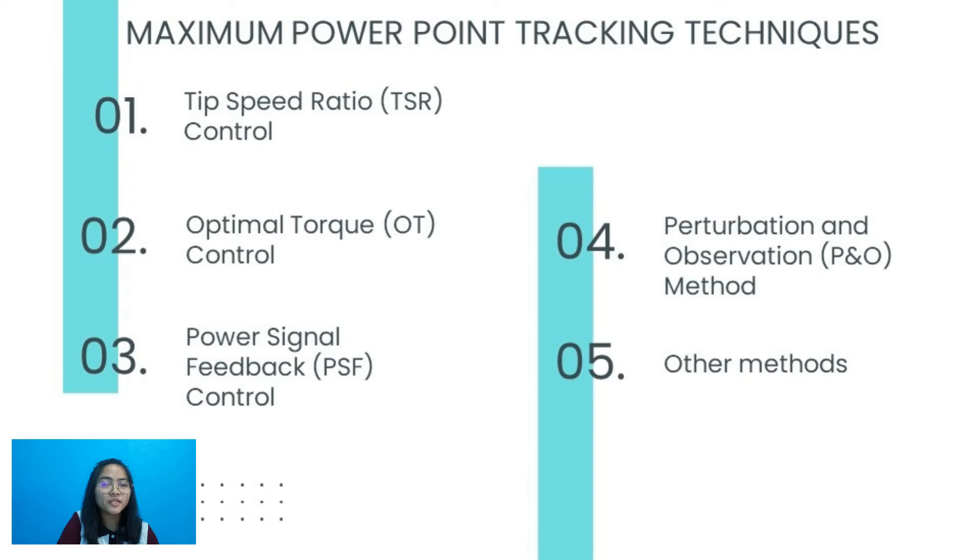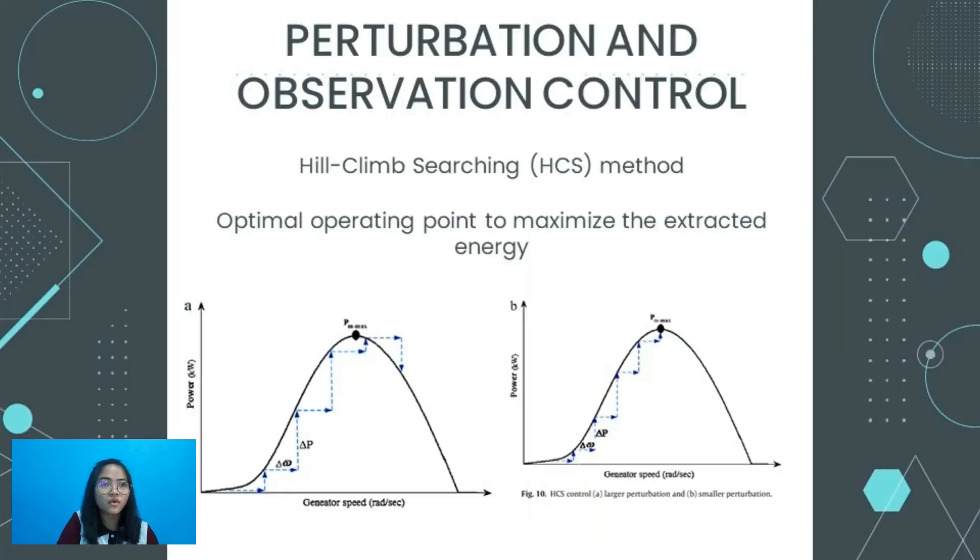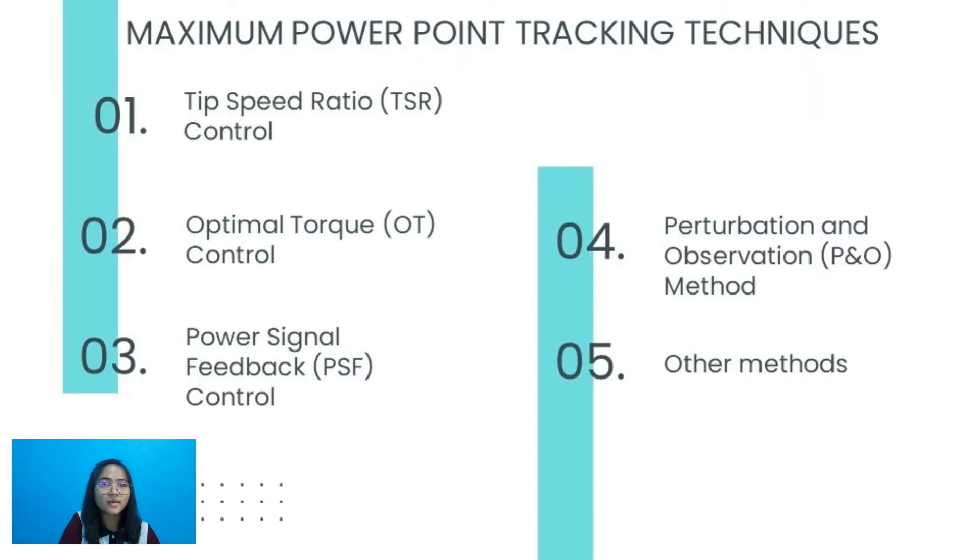Last is the perturbation and observation or P&O control, also known as the hill climb searching or HCS method. This is used mostly in wind systems to determine the maximum operating point to maximize the energy being extracted. The diagram shows the HCS control with larger and smaller perturbation. This method is based on perturbing a control variable in a small step size and by observing the resulting changes in the target function until the slopes become zero. This method is flexible and independent since it does not require prior knowledge of the wind turbine's characteristic curve.